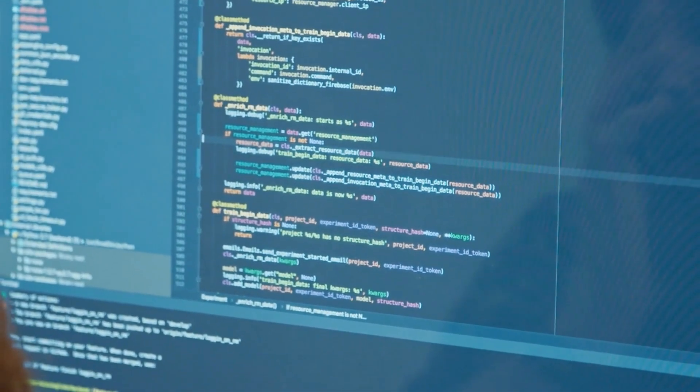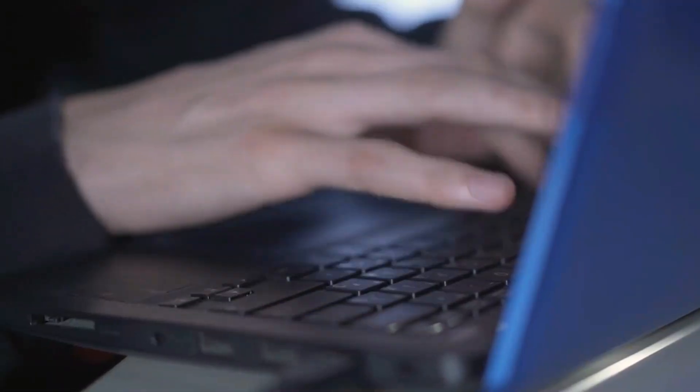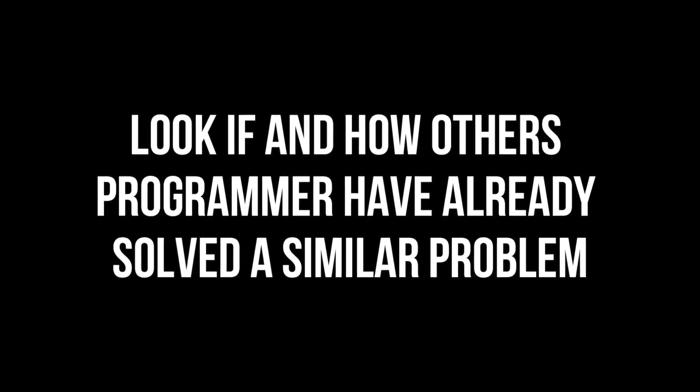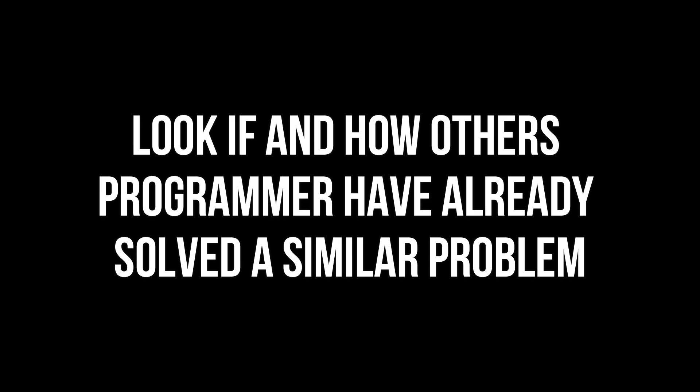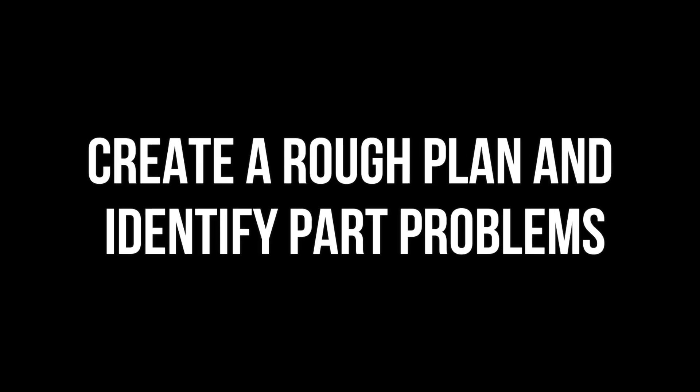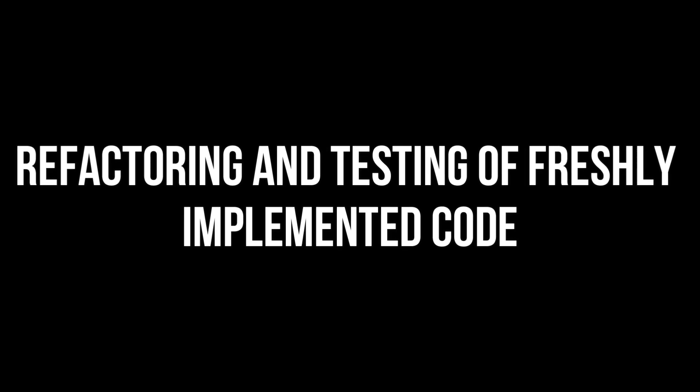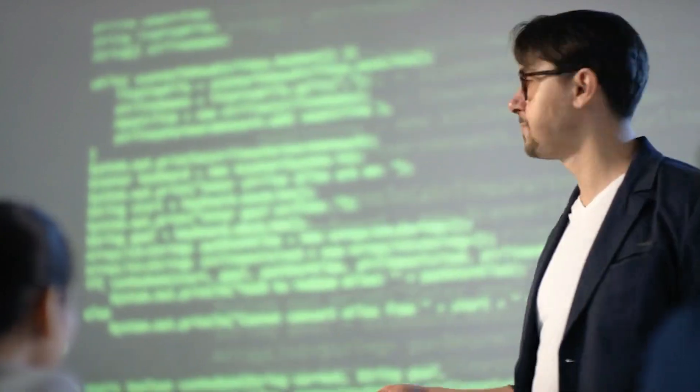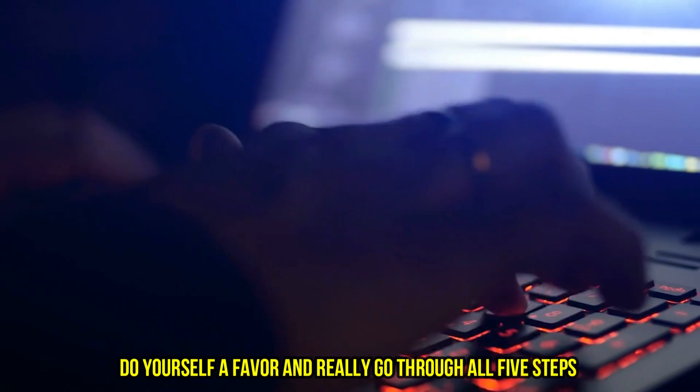To finish this video, let's summarize all the steps once again which can help you with solving any problem. Step number one is to identify the problem. Step number two is to look if and how other programmers have already solved a similar problem. Step number three is to create a rough plan and identify part problems. Step number four is to implement, and step number five is the refactoring and testing of freshly implemented code. Most people directly stop after step number four, which is obviously not very effective in the long term. Do yourself a favor and really go through all five steps every time you're working on a programming problem.